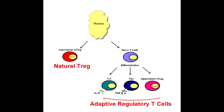What are regulatory T-cells? Regulatory T-cells, which were formerly known as suppressor T-cells, are a subpopulation of T-cells which modulate the immune system. They maintain immune tolerance and prevent autoimmune diseases by producing anti-inflammatory cytokines like interleukin-10 and TGF-beta.